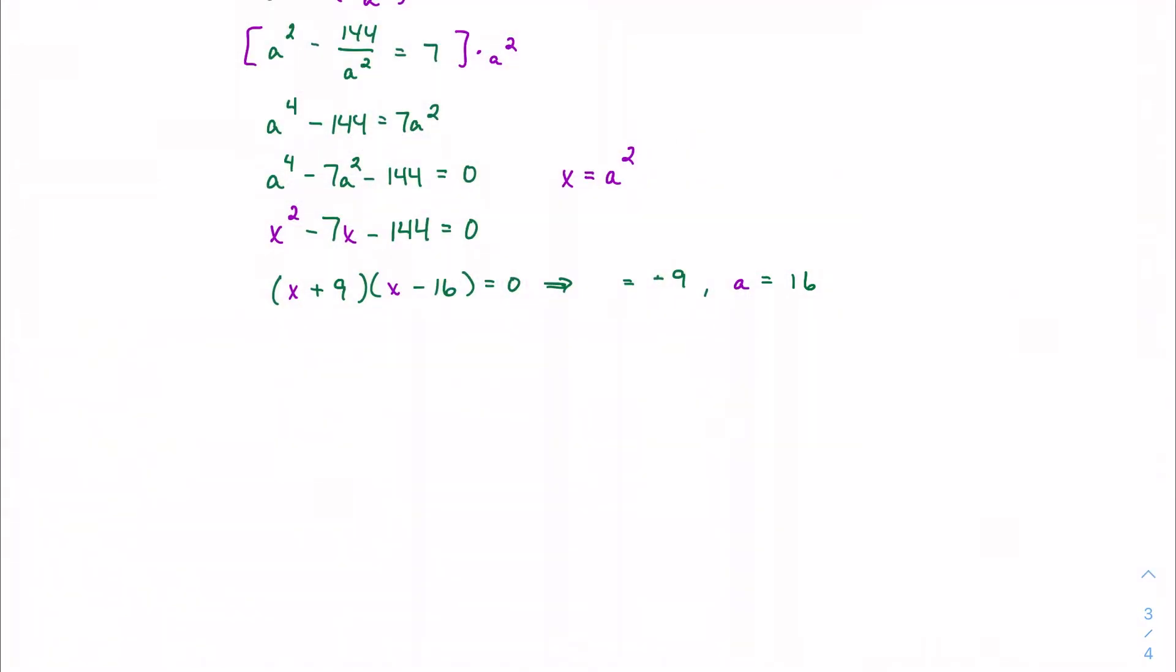I need to undo the substitution so that I can actually end up with the variable I need to be left with. So this is really a squared equals negative 9 and a squared equals 16.